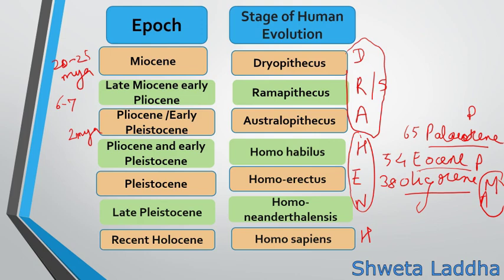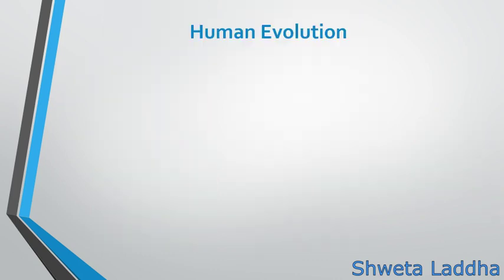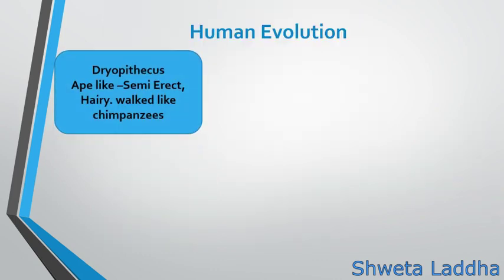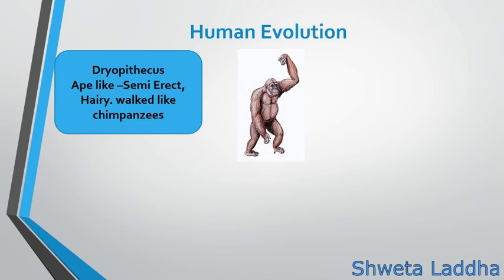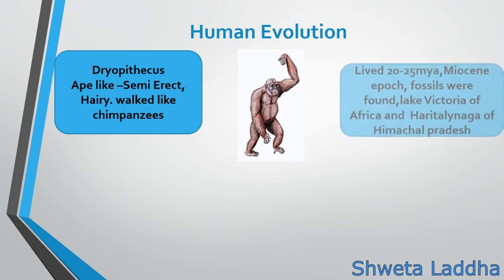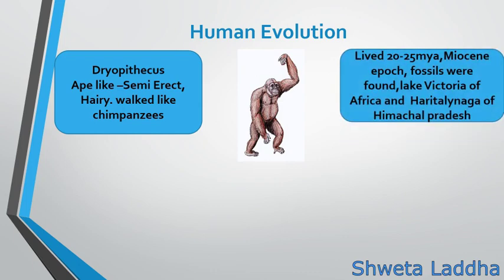Human evolution first started with Dryopithecus, present in the early Miocene period 20 to 25 million years ago. These were ape-like; their body was semi-erect, the entire body was still hairy, and they walked like chimpanzees using their forelimbs — quadrupedal locomotion. Fossils were found at Lake Victoria in Africa and Haritalyangar in Himachal Pradesh.